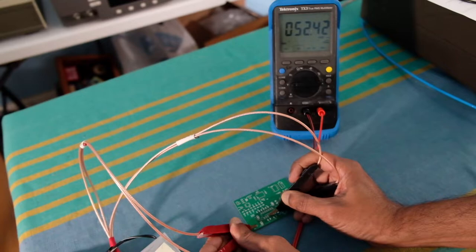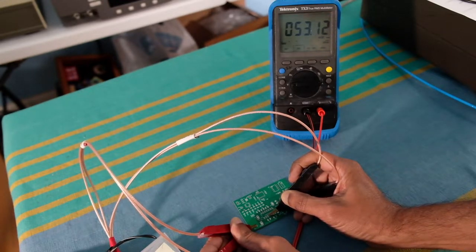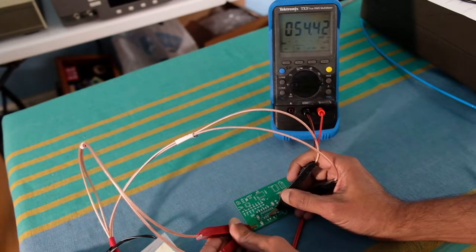So as you can see I got a reading of 52.4, 52.6 milliohms, which indicates my short is fairly in this region.